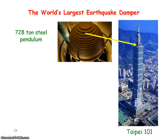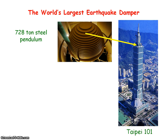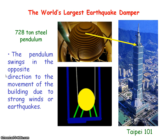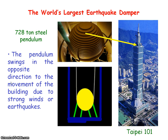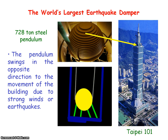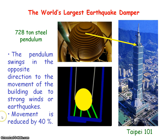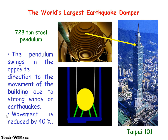The world's largest earthquake damper is a 728-tonne — where one tonne equals 1000 kg — steel pendulum suspended in the Taipei 101 building. The pendulum swings in the opposite direction to which the building would be moving due to very strong winds or earthquakes, and so the pendulum can damp the oscillation of the building by 40%.